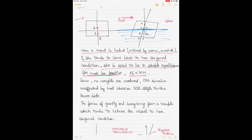The center of buoyancy shifts because the underwater volume of the immersed part is greater on the starboard side, so the center of buoyancy shifts and becomes B1. The new center of buoyancy, acting vertically upwards through its new position, cuts the centerline of the ship at a new position called the transverse metacenter, M. The distance from keel to M is KM, and from center of gravity to M is GM.